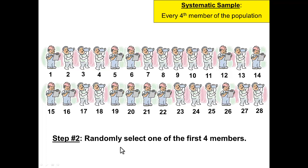Step number two: randomly select one of the first four members. Four members because we want to choose every fourth member of the population.